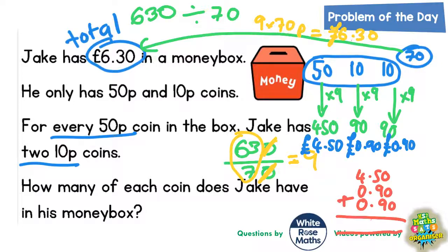Let's check it makes £6.30. Zero, zero and zero makes zero. 9 and 9 makes 18, plus the 5 is 23 — put the 3 in, carry the 2. 4 plus nothing plus nothing plus 2 is 6. Put your decimal point in: £6.30. As you can see, that does actually add up to £6.30.